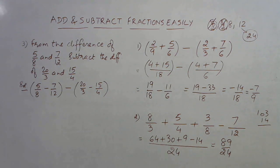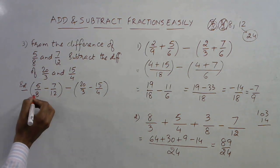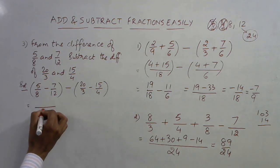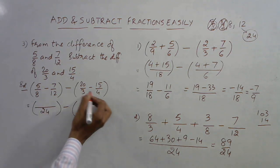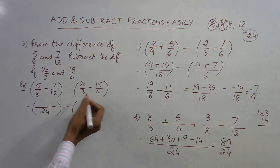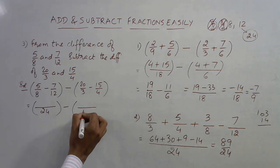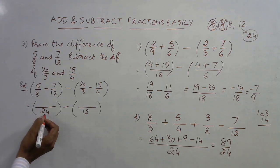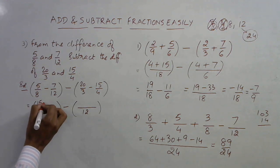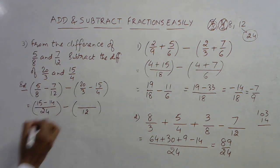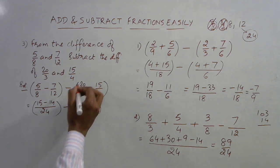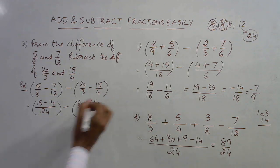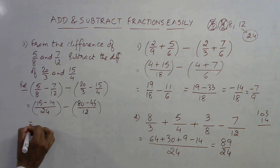For 8 and 12: 8 does not divide 12, so take multiples of 12: next is 24. Since 24 is divisible by 8, LCM = 24. For 3 and 4: they are co-prime, so take their product — LCM = 12. Now: 24÷8=3, so 3×5=15; 24÷12=2, so 2×7=14. First bracket = 1/24. For the second bracket: 12÷3=4, so 4×20=80; 12÷4=3, so 3×15=45. Second bracket = (80−45)/12 = 35/12.